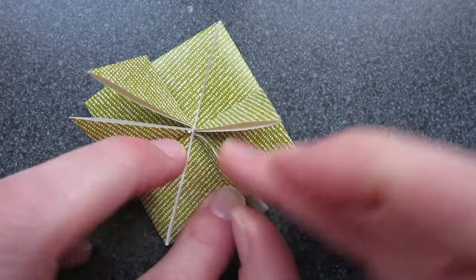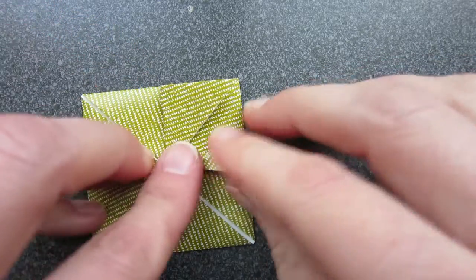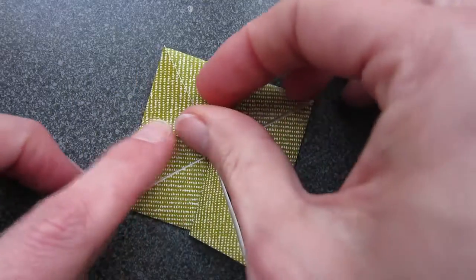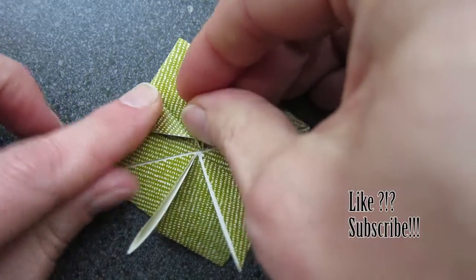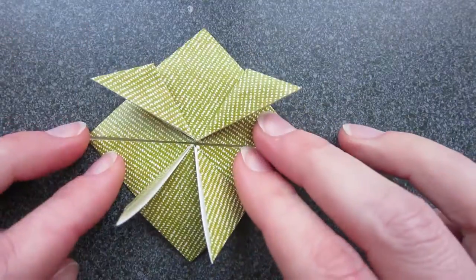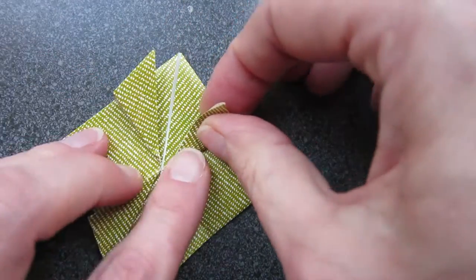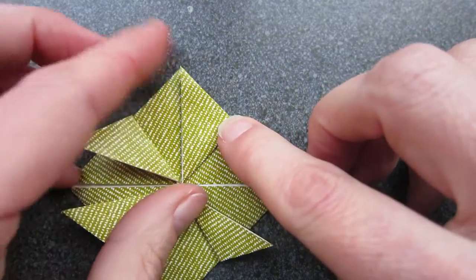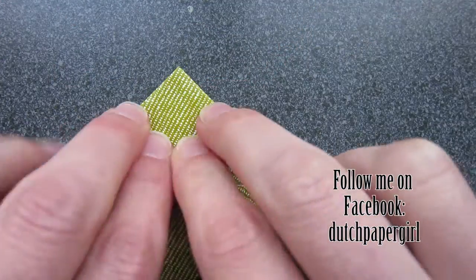Now make a small fold with the same layers as before but now in the opposite direction. Just a small one, you see. By doing this you will make a jumpy leg. He needs four, so do it on all four sides. Just a small fold.